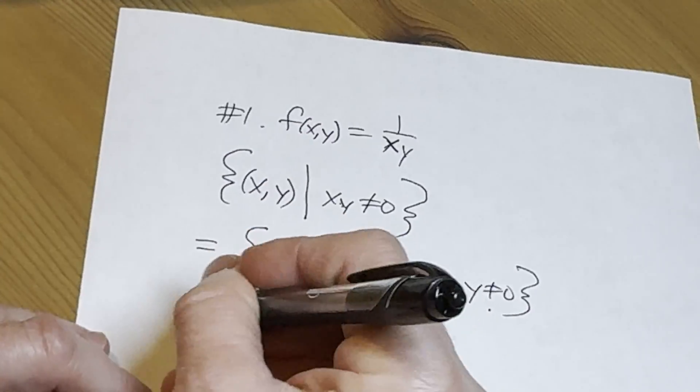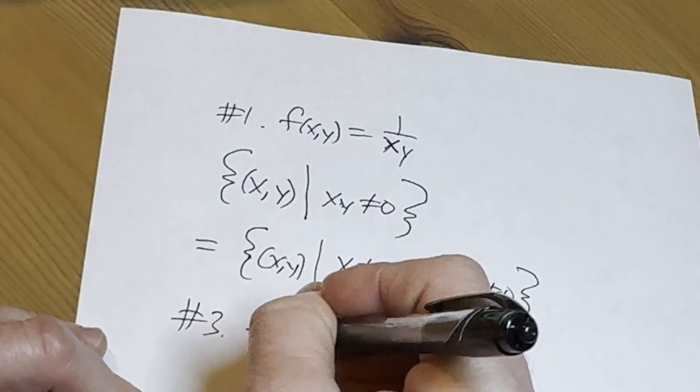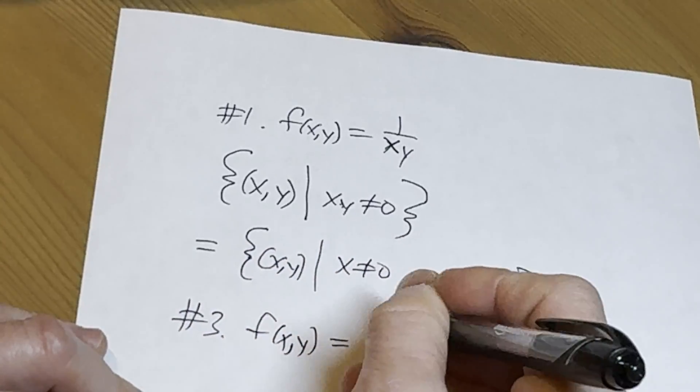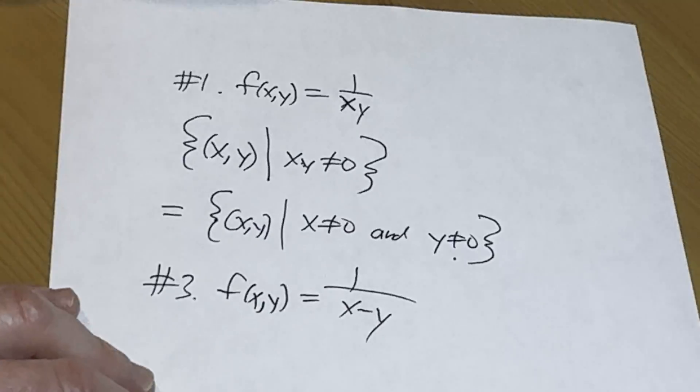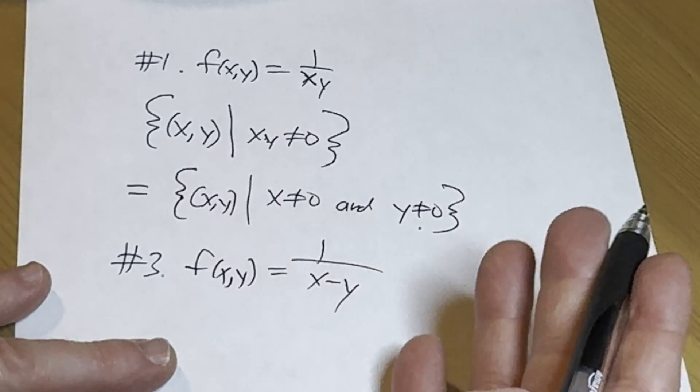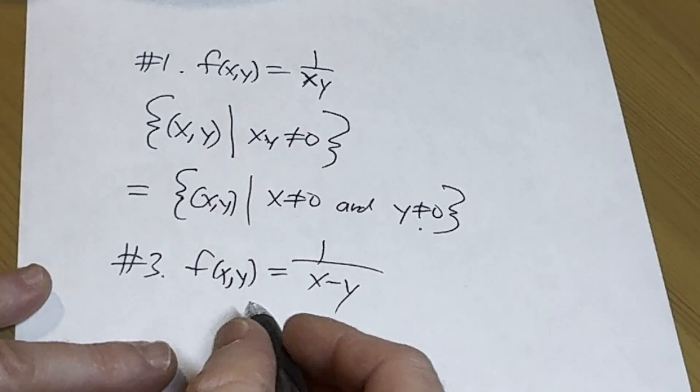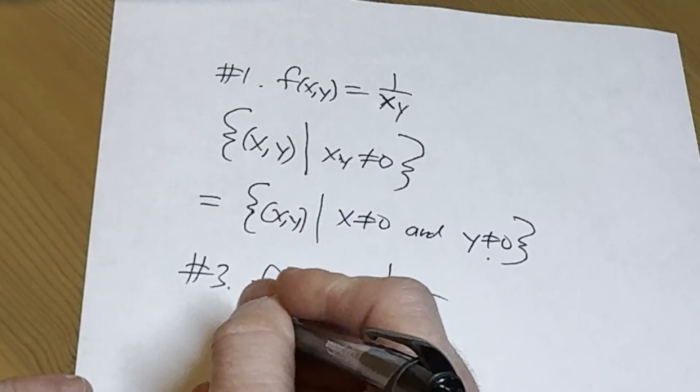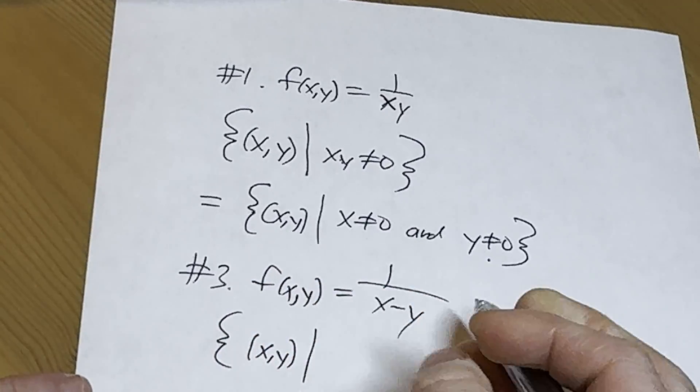A little bit of multivariable calculus, why not? Even though we're not really doing any calculus yet, but multivariable functions. So in this case, again, it's a set of all ordered pairs, x comma y, such that, well, x minus y can't be equal to zero.